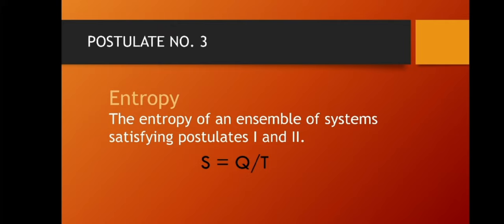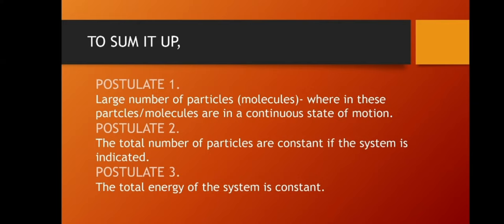Postulate 3 is about entropy. The entropy of an ensemble of systems satisfying postulates 1 and 2. Those are the three postulates of statistical mechanics. To sum it up in easier words: postulate 1 is about a large number of particles or molecules in a continuous state of motion — that's why it's infinite, because the motion of the particles in the ensemble is continuous. Postulate 2 states the total number of particles is constant if the system is isolated. And postulate 3 states that the total energy of the system is constant.